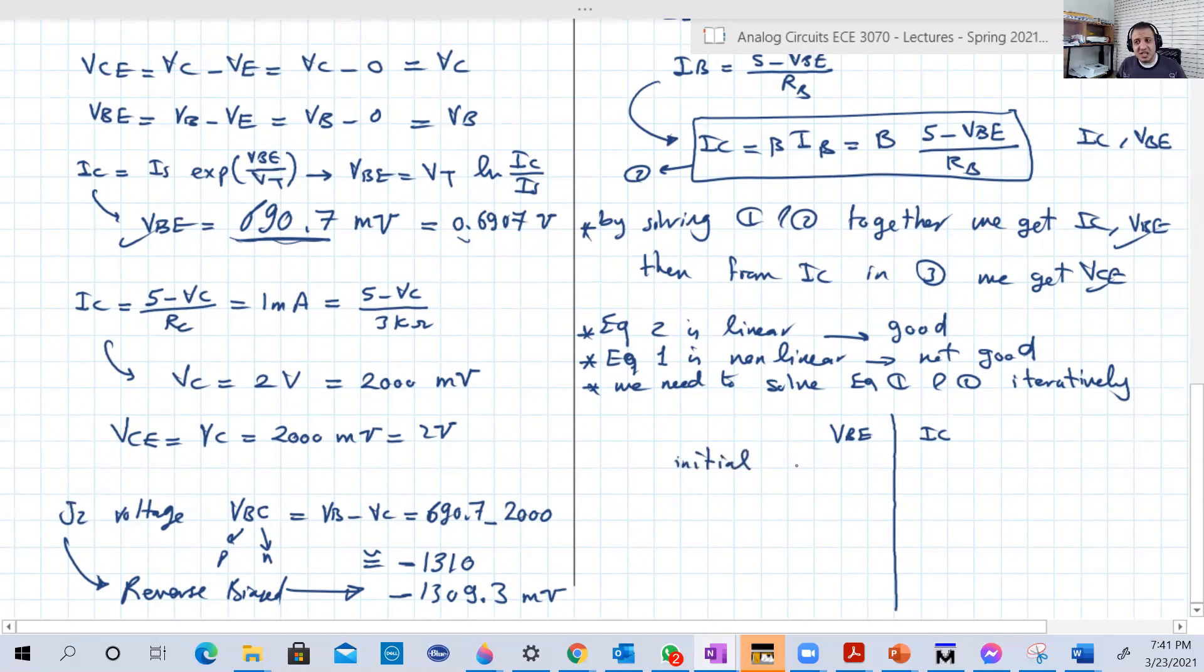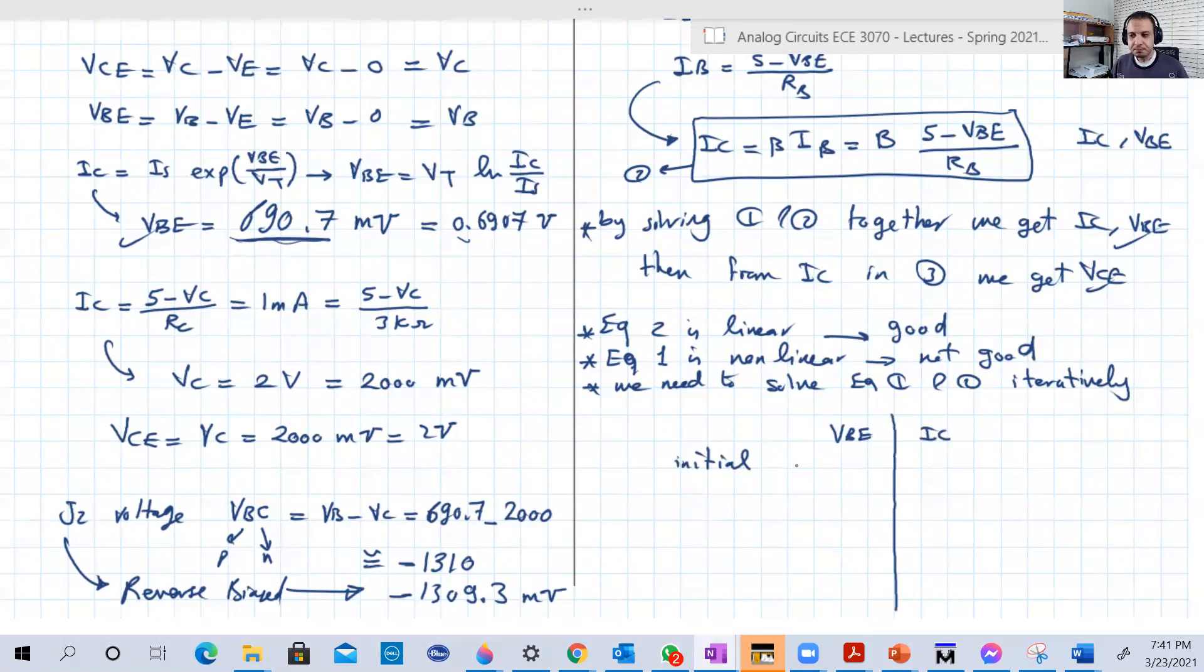So we're going to have two columns, VBE in one column and IC in another column. And we're going to have initial value for VBE. Let's put 0.6. These circuits usually VBE is between 0.6 and 0.8. It's good to assume 0.6 all the time because it's not 0.7, it's not like the diode. The diode is usually really 0.7, but here the error a little bit around 0.7 is bigger. So it's good to assume 0.6. And let's do four decimal points. You can choose, for example, if the problem says stop when three decimal places are not changing, then you just stick to that. But I am going to do here four decimal places.